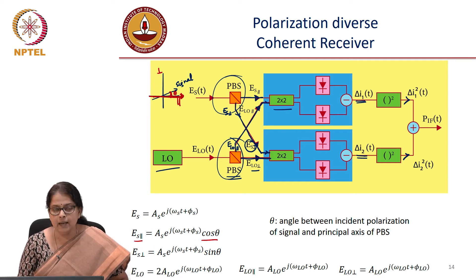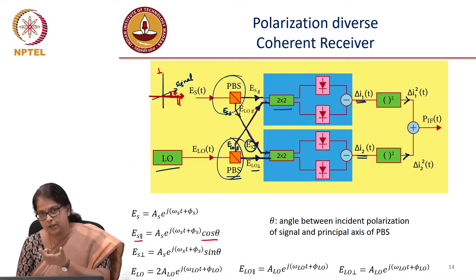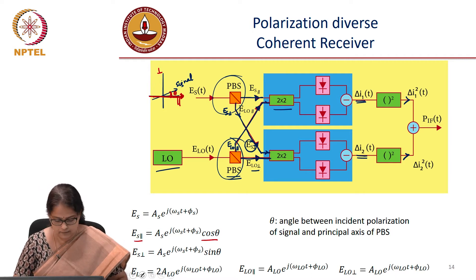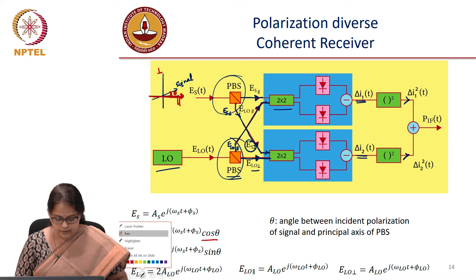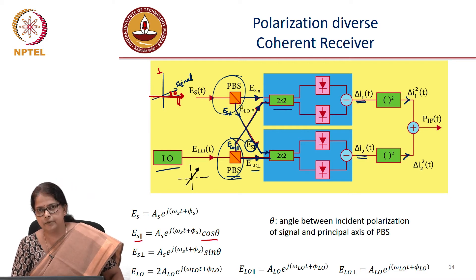Similarly, ELO, you do not have to have cos theta and sin theta because that is something that you are controlling locally, right? So you could always have the local oscillator at an angle 45 degree with respect to the principle axis of the PBS.